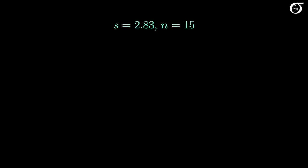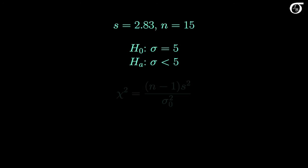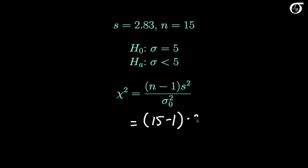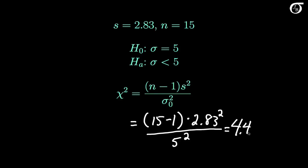Here's the sample standard deviation and sample size once again. We are going to test the null hypothesis that the population standard deviation is 5, against the alternative hypothesis that it is less than 5. If we are able to reject the null hypothesis in favor of this alternative, that would mean we have strong evidence that the population standard deviation is less than 5, as our boss wants. The appropriate chi-square test statistic is (n-1) times the sample variance divided by the hypothesized variance. The observed value is (15-1) times 2.83 squared over 5 squared, which works out to 4.485.